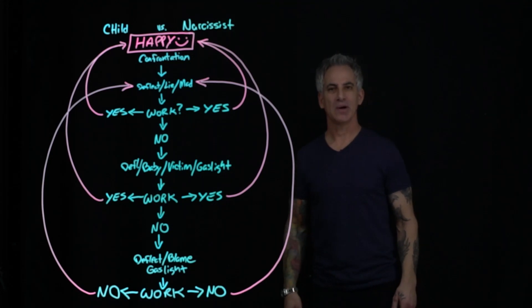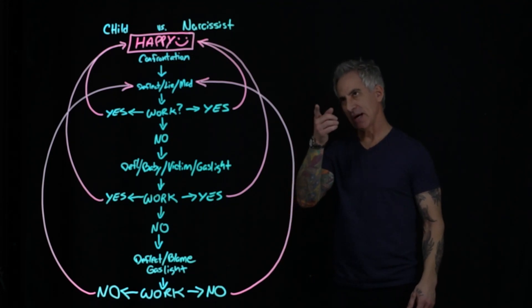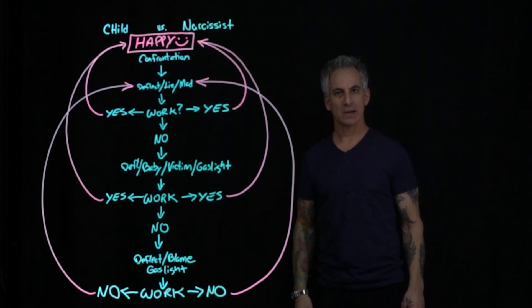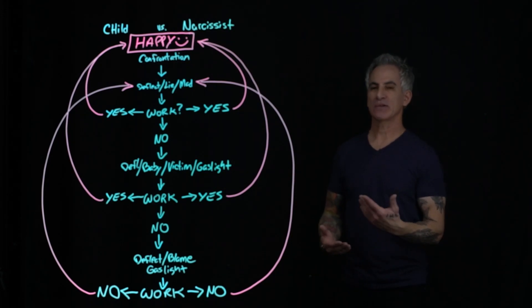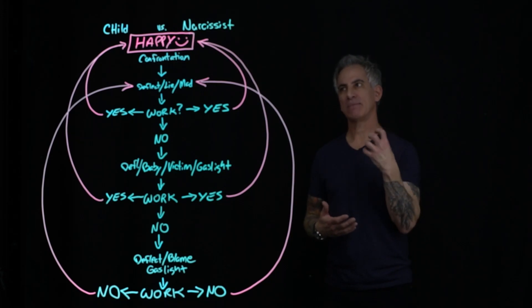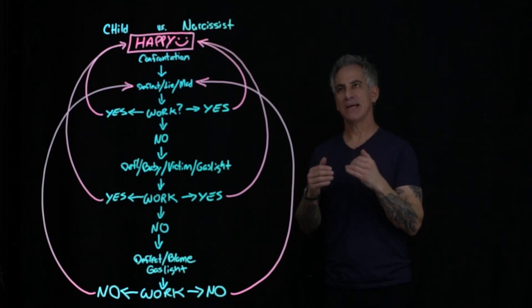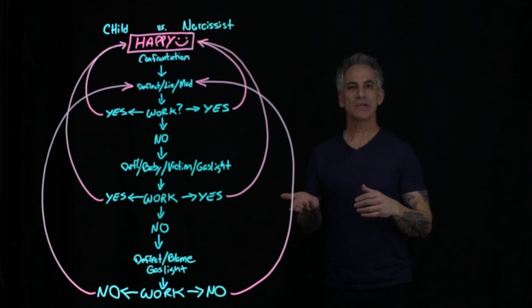Hi, this is Marty and welcome back for another video. If you've never heard of it, it's called the Narcissist Flowchart. Basically what it does is it shows a flowchart of the mind of a narcissist as it's encountering confrontation, challenging, or anything.